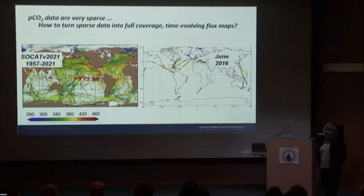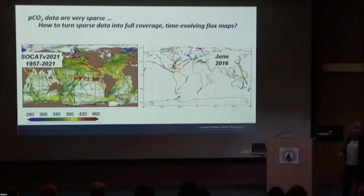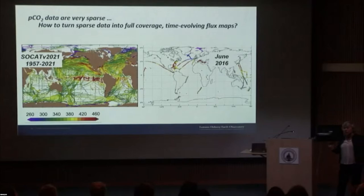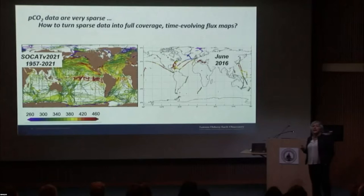Looking at all the SOCAT data, you can see some big undersampled areas. But unfortunately, this is not really what the coverage looks like in practice — the data is incredibly sparse. This is just one month. We want monthly maps to capture interannual variability over the decades, and in fact we have about one and a half percent coverage over the last 30 years — a few ship transects in each basin each month. How do you fill in the gaps?